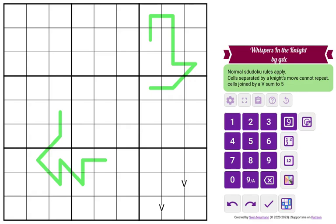This is Whispers in the Night by GDC. We have normal Sudoku rules. And then we have these two cells up to 5. And the green lines are German whisper lines. So any adjacent digit along the line must have a difference of at least 5.